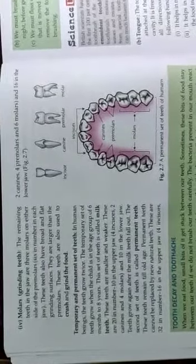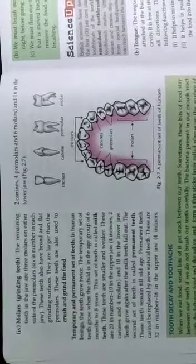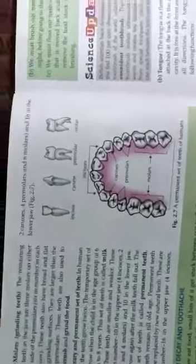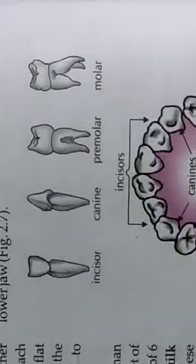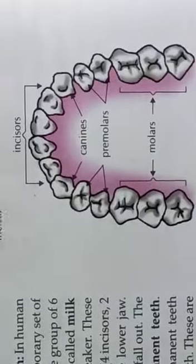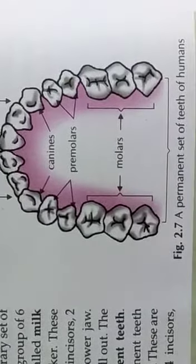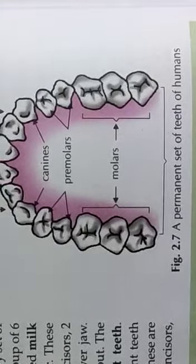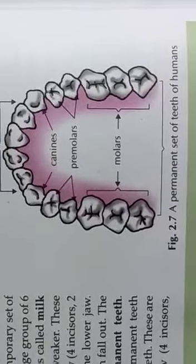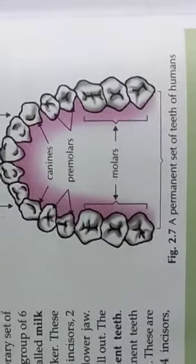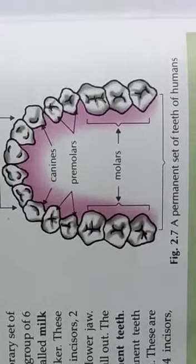We have the temporary and permanent set of teeth in human beings. The teeth grow twice. The temporary set of teeth grow when the child is in the age of 6 months to 8 years. That is also called the milk teeth. The number of these teeth are 20, 10 in the upper jaw, and 10 in the lower jaw.